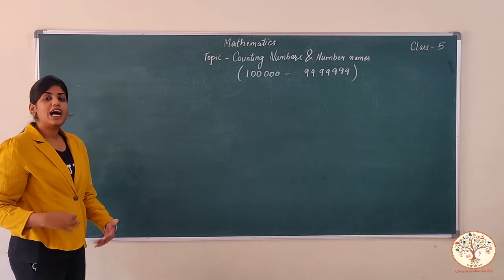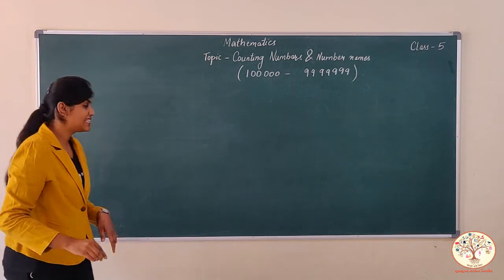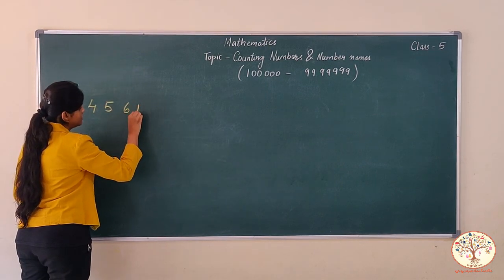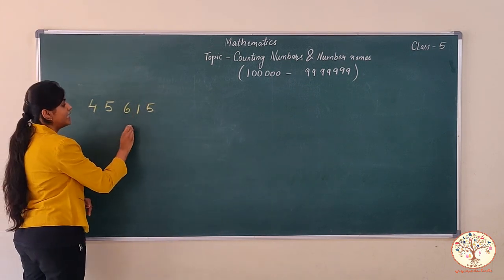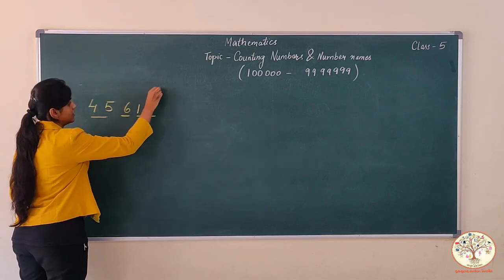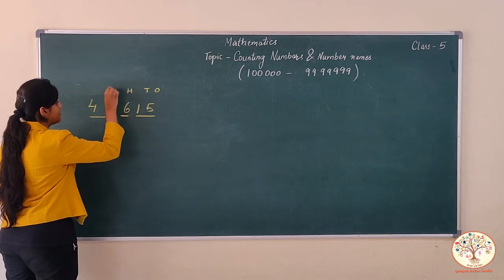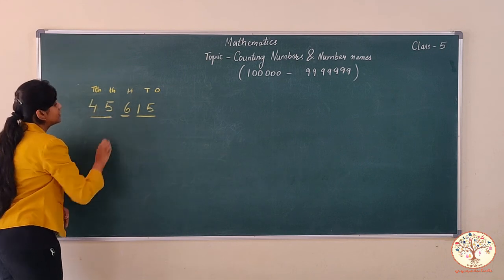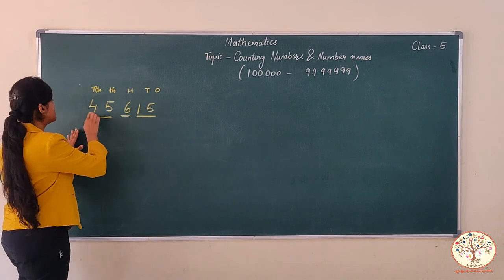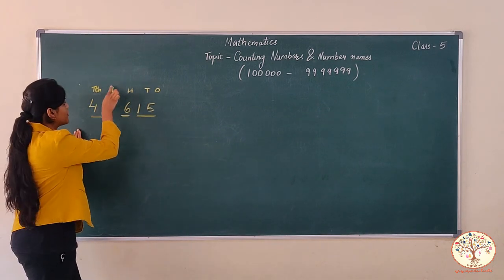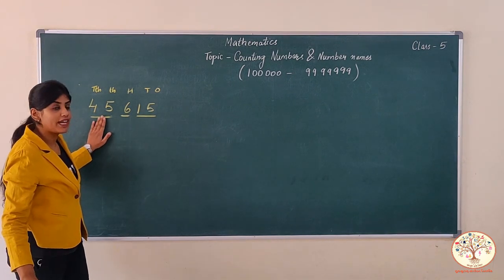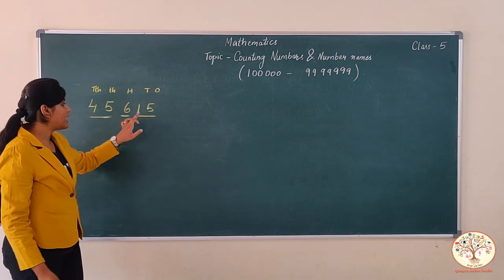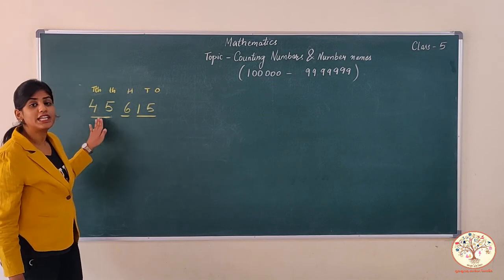Recall how you write the number name for a five-digit number. Let's take one example: this is forty-five thousand six hundred fifteen. We divide them into three parts — tens and ones together, hundreds, and thousands and ten thousands to be read together. We start from here: forty-five is in the thousands place, so we name it forty-five thousand. Then six is in the hundreds place, so six hundred. Tens and ones together: one and five makes fifteen. So the number name is forty-five thousand six hundred and fifteen.